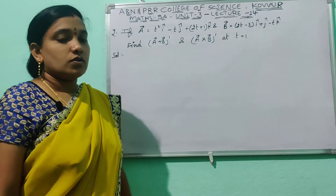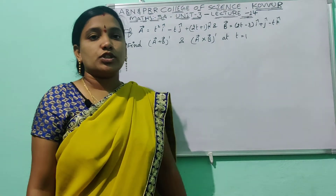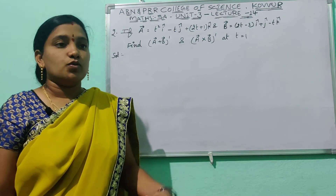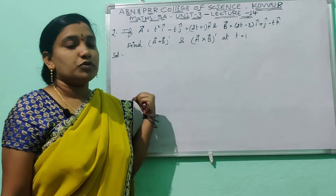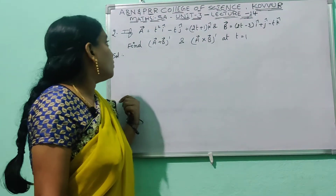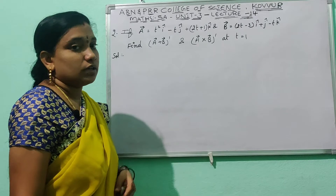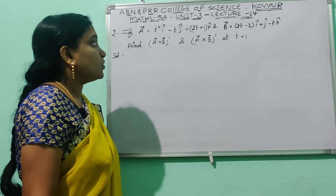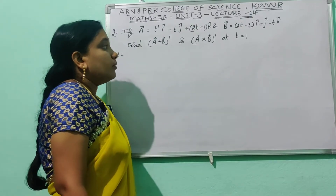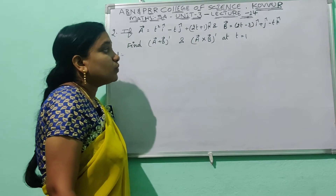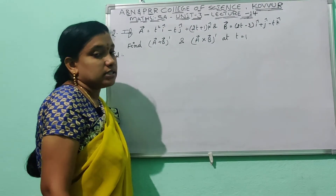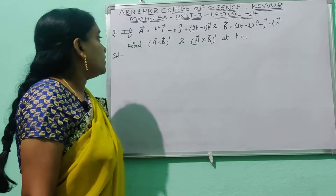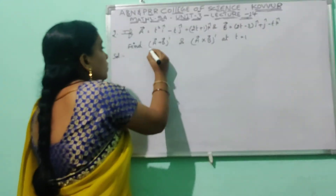Hi students. So last class we covered the first problem. In this class, the second problem should be: vector ā equals t² î − t ĵ + (2t+1) k̂, and b̄ equals (2t−3) î + ĵ − t k̂. Find the values of (ā + b̄)' and (ā × b̄)' at t = 1.